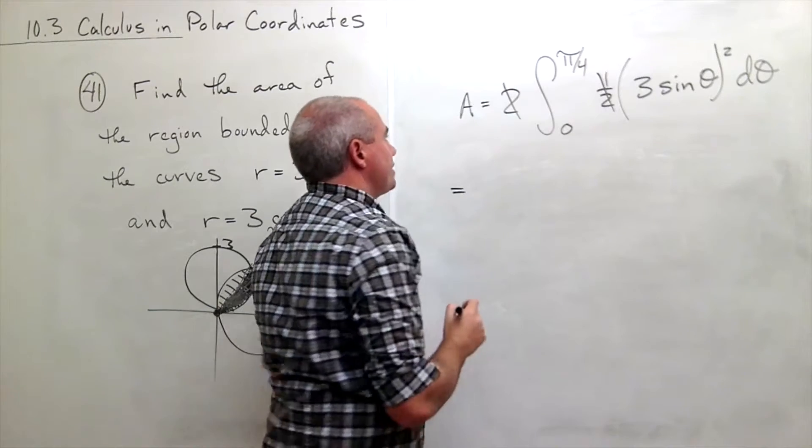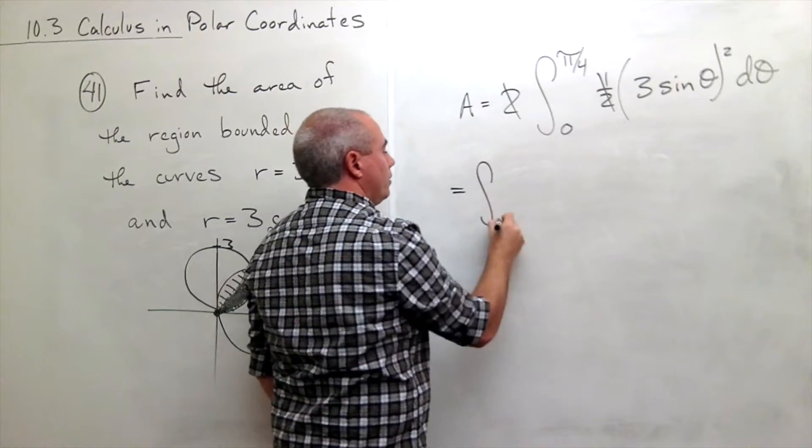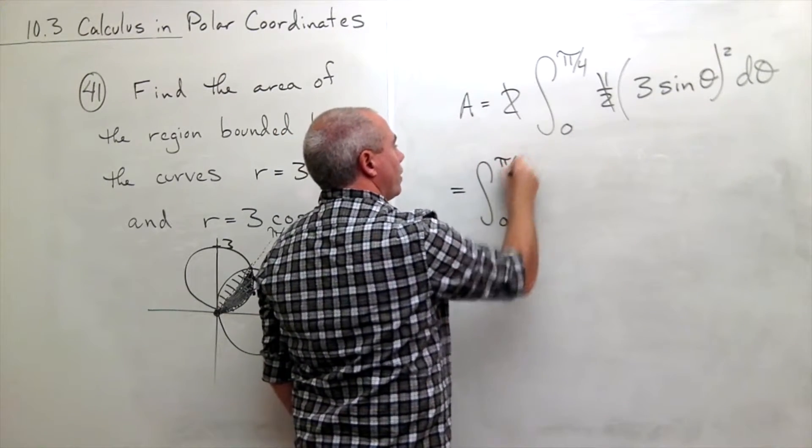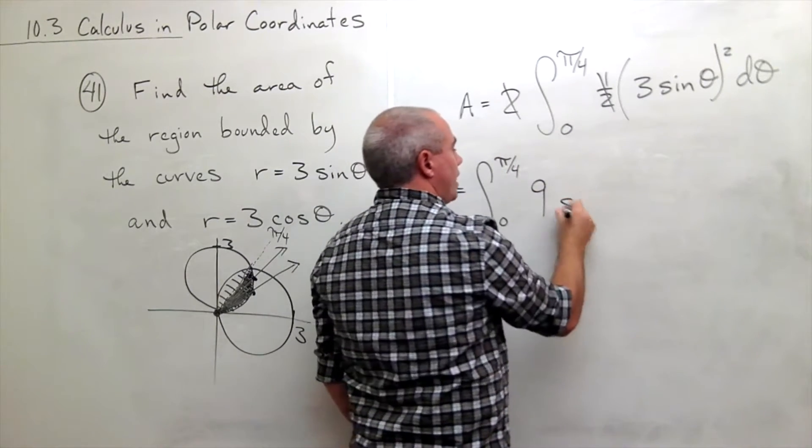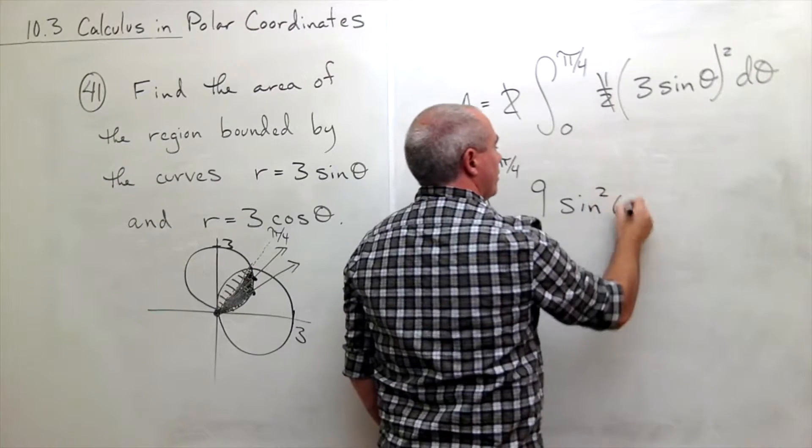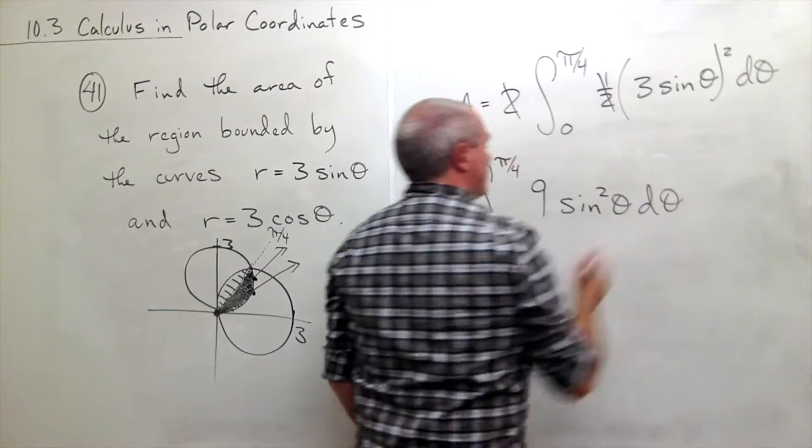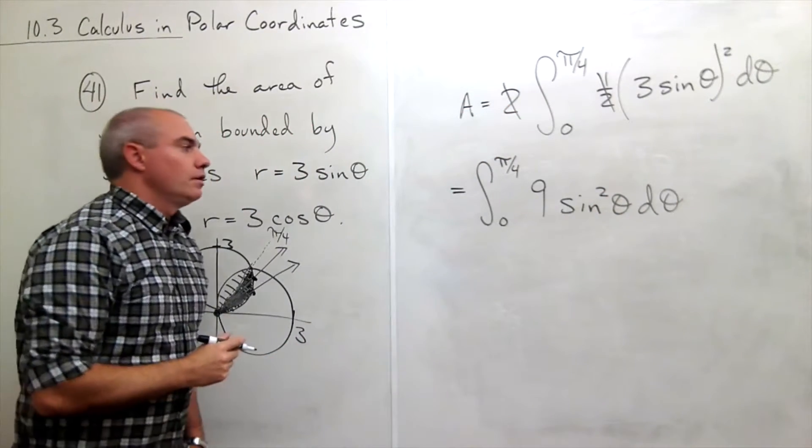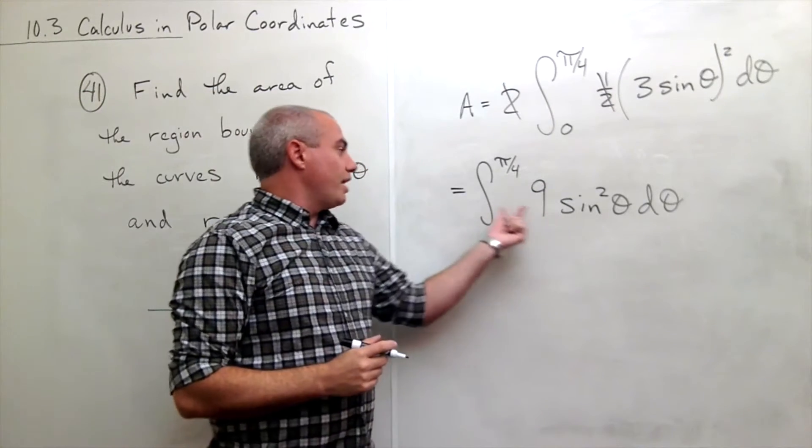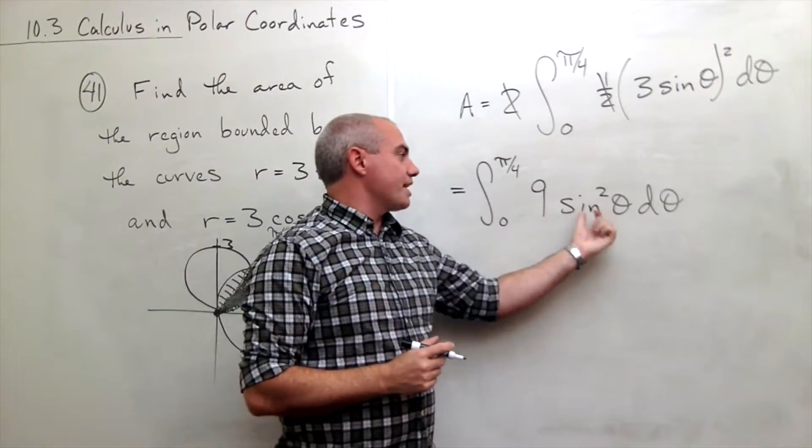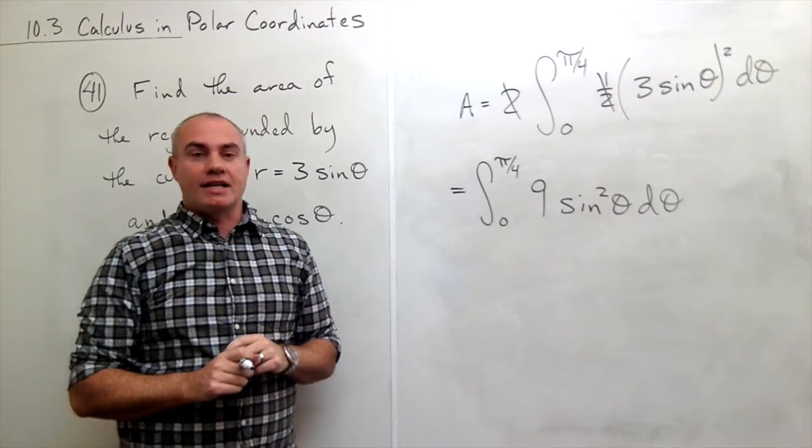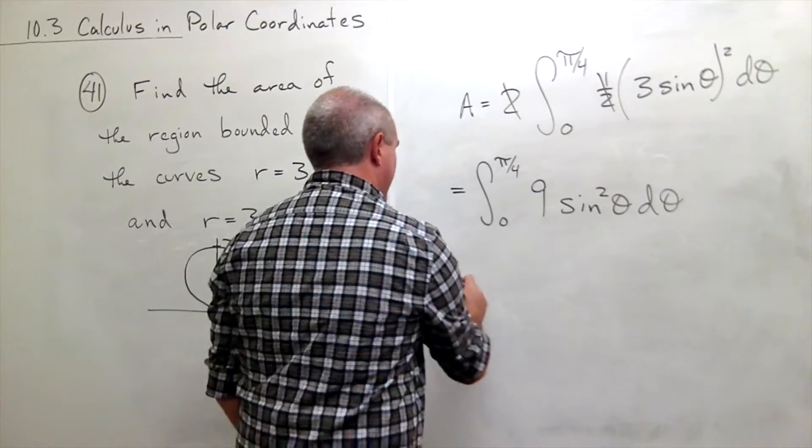And so I can rewrite this area as integral from zero to pi over four of, if I square the three, I get nine sine squared theta d theta. I can pull the nine outside of the integral because it's a constant. And then I can replace sine squared theta with its half angle identity form. So let's do that right now.